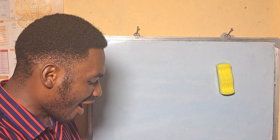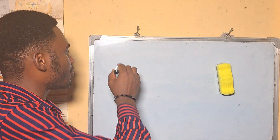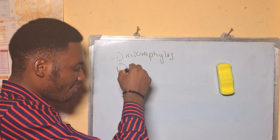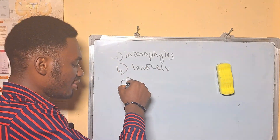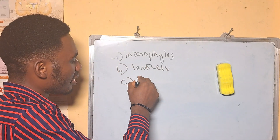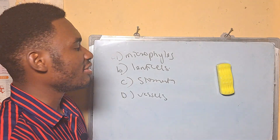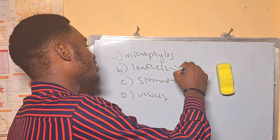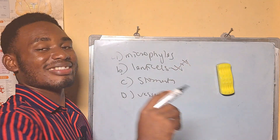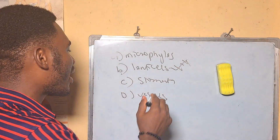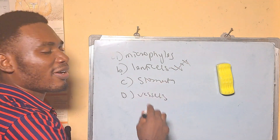In woody stems, gas exchange takes place through — A: microfibrils, B: lenticels, C: stomata, D: vessels. The answer is B, lenticels. Lenticels are found in the stems, while stomata are found in the leaves.